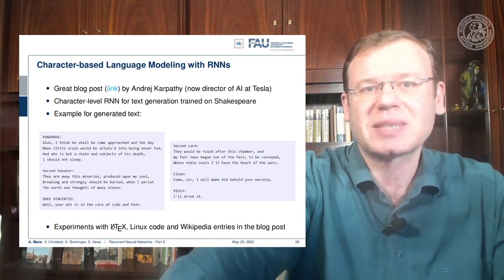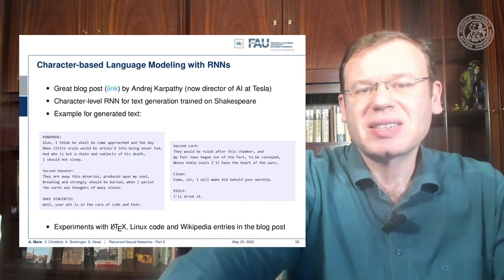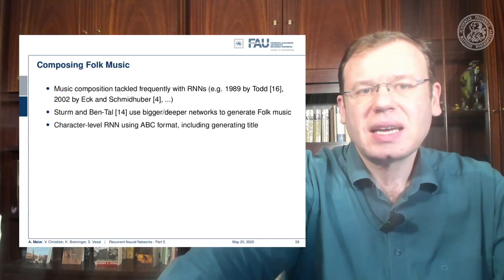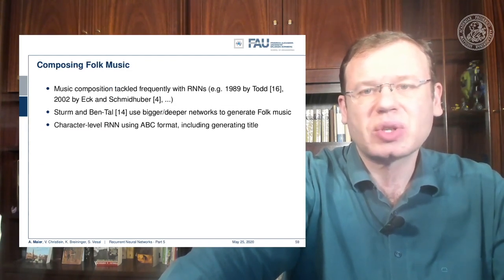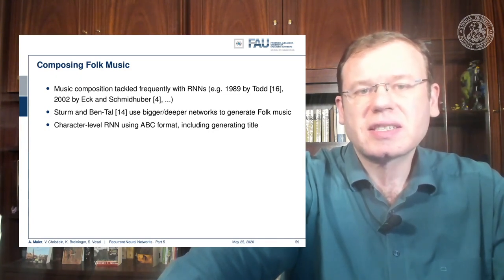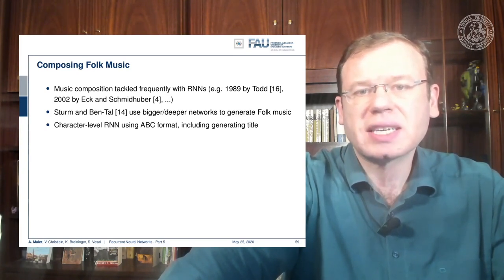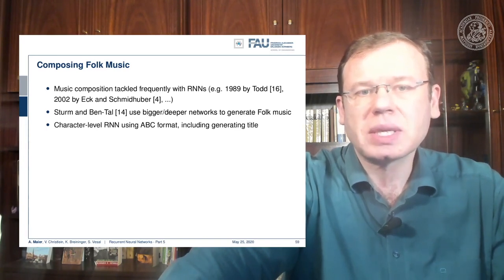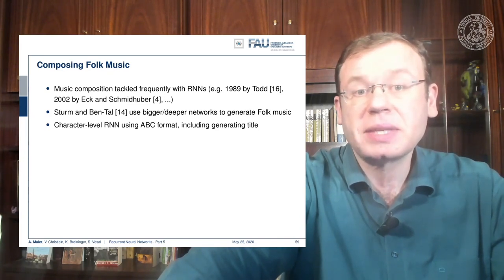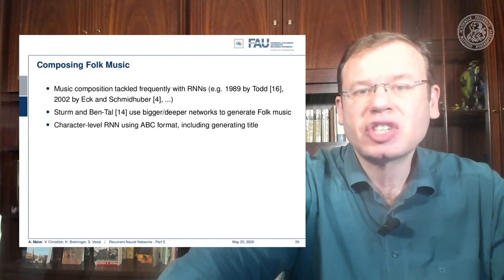Of course you can generate many other things. One other very nice example that I want to show to you today is composing folk music. Music composition is typically tackled with RNNs. You can find different examples in literature also by Eck and Schmidhuber. The idea is to use bigger, deeper networks to generate folk music. What they employ is a character level RNN using ABC format, including generating the title.